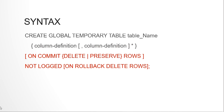With ON COMMIT, you can either DELETE ROWS — meaning whenever a commit is applied the rows get deleted, making it transaction-specific — or PRESERVE ROWS, meaning the rows will be preserved but only for that session. As soon as the session ends, whether abruptly or by doing an exit, the data will get lost. That's why these are temporary tables — the data is not persistent; it is only specific to that session.